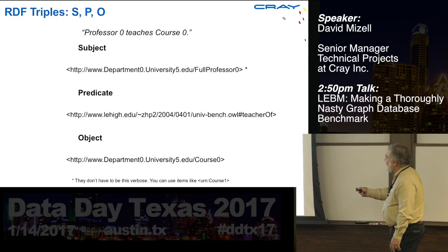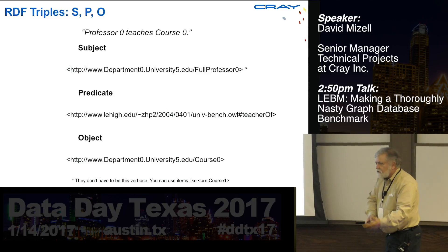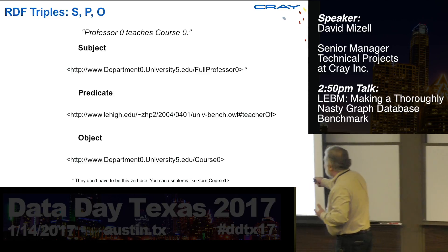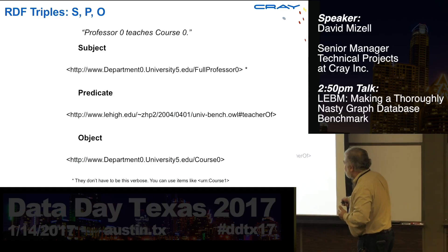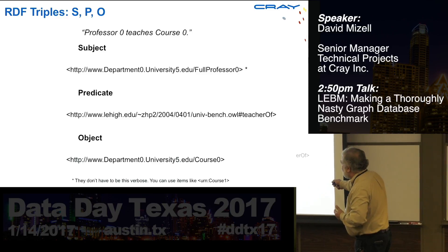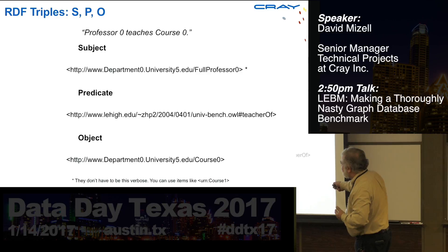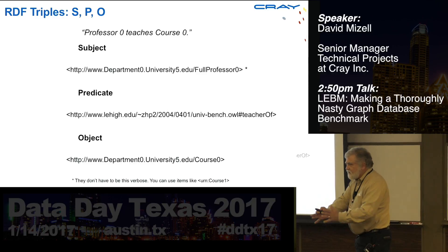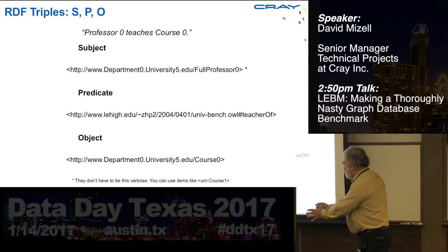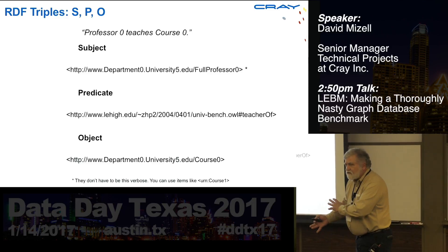Looking at one of these triple strings, the bottom one breaks down like this: 'Professor zero teaches course zero.' That's the fact it holds. Those three strings are categorized as the subject, the predicate, and the object of the fact. Professor zero is the subject, 'teaches class' is the predicate, and course zero is the object.